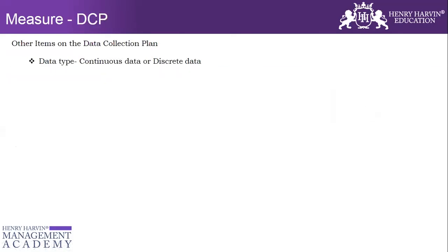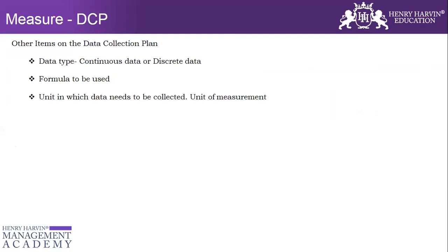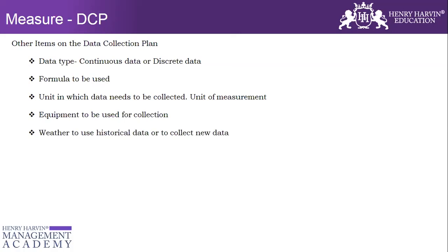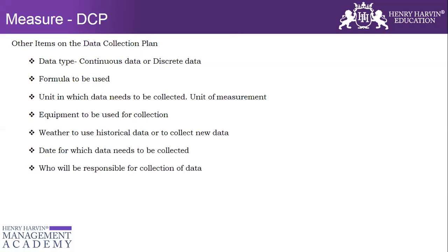There are also other items in the Data Collection Plan, such as data type — whether it is continuous data or discrete data, which we will discuss further. There is also the formula used to calculate the operational definition, the unit in which data needs to be collected — such as meters, centimeters, days, hours, rupees, dollars, GBP, etc. — the equipment to be used for data collection, whether to use historical data or collect new data, the date for which data needs to be collected, who will be responsible for collection of data, and whether any training is required for the data collection.